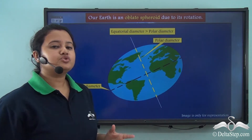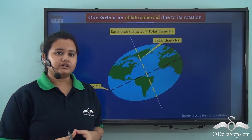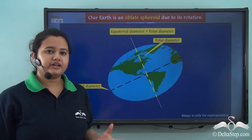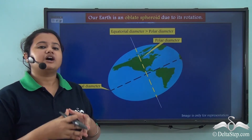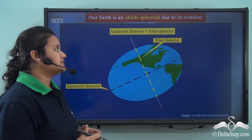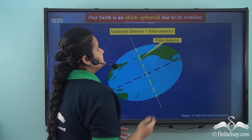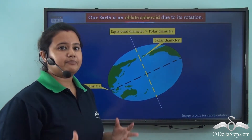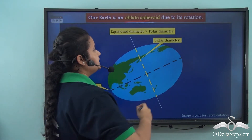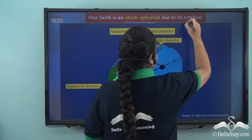So the true shape of the earth is not spherical — rather, our earth is an oblate spheroid, and this shape happens due to its rotation.